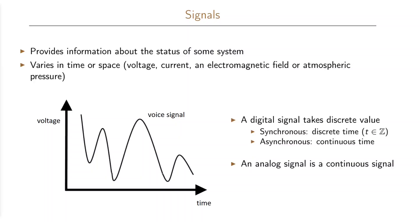The difference between an analog and a digital signal is that the digital signal takes discrete values on the y-axis while the analog signal takes continuous values. If we look at the time, that is the x-axis, the digital signal can take values in discrete time. These signals are then called synchronous signals. In this case we often denote the time instances by an integer, so the time t is in the set of integers Z. If the time is continuous then the signals are called asynchronous signals.